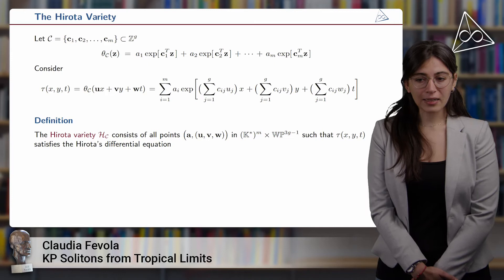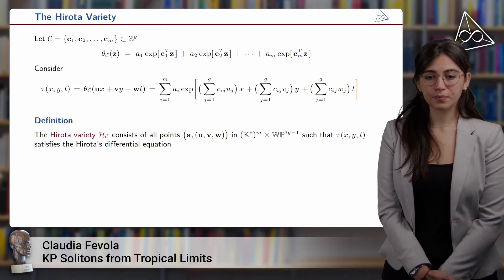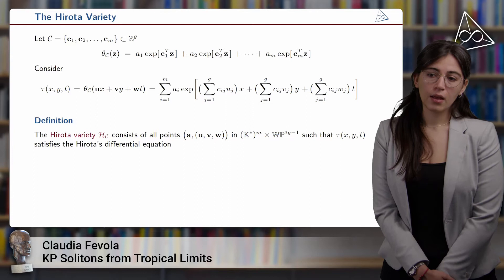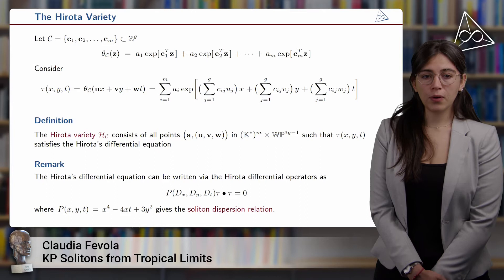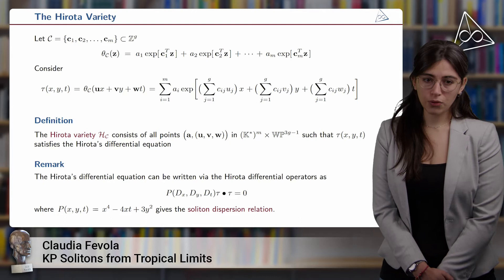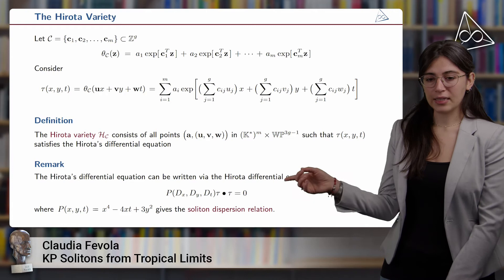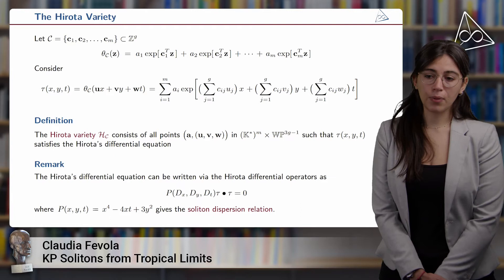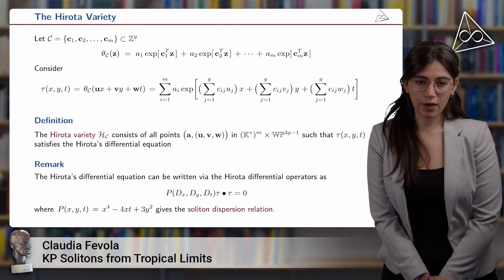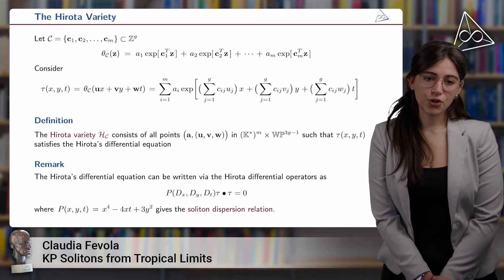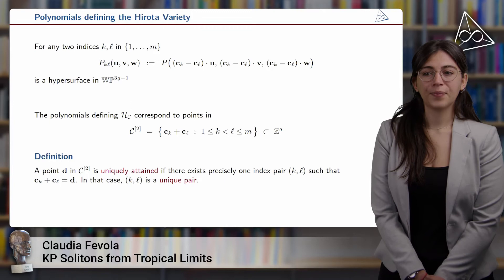This is how the tau function looks in this case. We define the Hirota variety to be the variety of all points A, U, V, and W in this product space such that the tau function satisfies the Hirota differential equation. We want to give explicit equations to this Hirota variety. The Hirota differential equation can be written in terms of Hirota differential operators, where p is a polynomial depending on the three variables, with physical meaning called the soliton dispersion relation. This will play a central role in defining the generators of the Hirota variety.